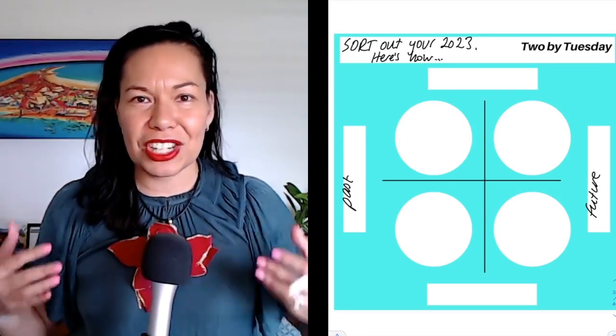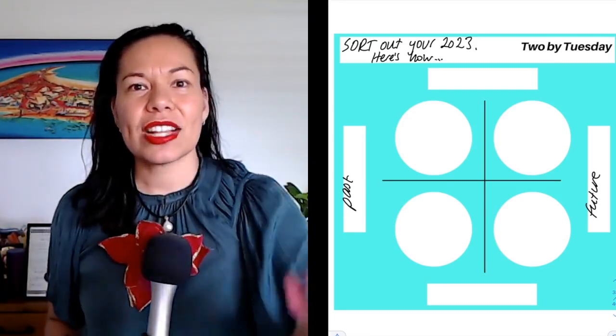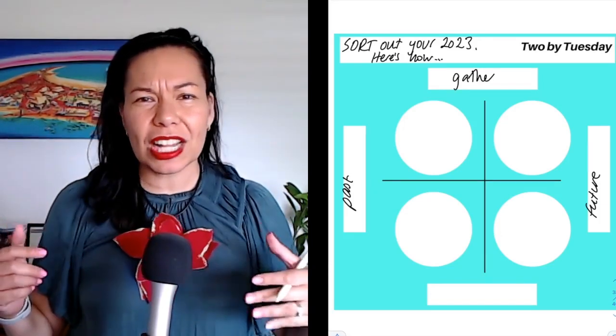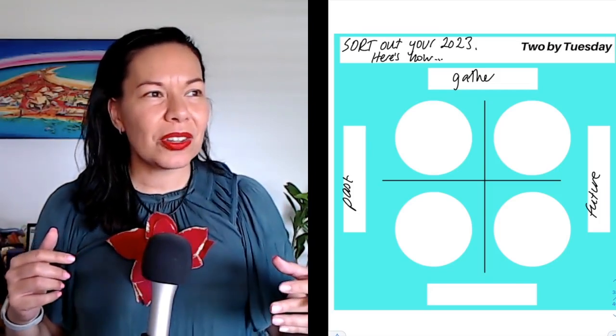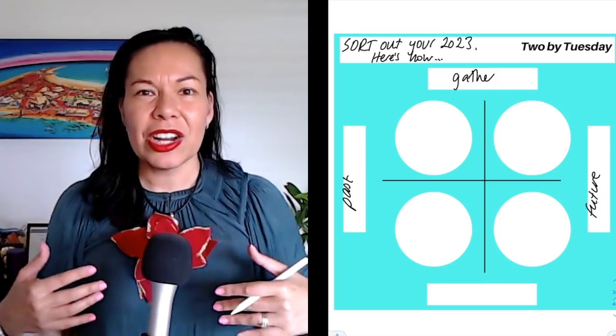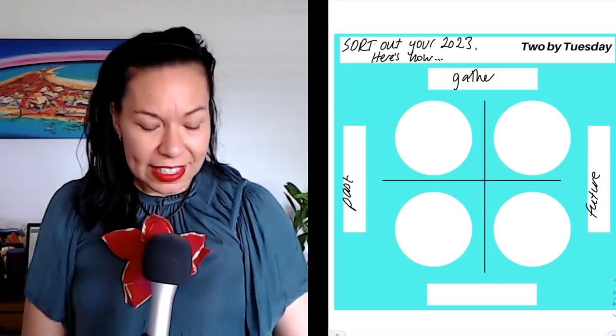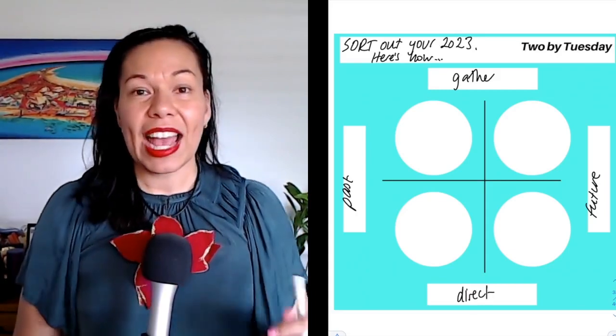One is you're going to gather the data, gather the information, gather the evidence, and the next is you've got to direct that towards something. On the y-axis up the top, I've got gather, a bit of self-reflection research mode, but also have a deep dive into who you are, what brought you joy, what doesn't, etc. And then we're going to direct it. So down the bottom of the y-axis is the word direct. Once you have that information, where you're directing your energy, where you're directing that information.